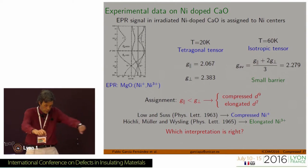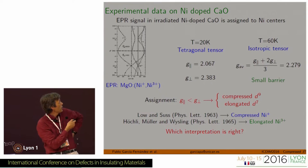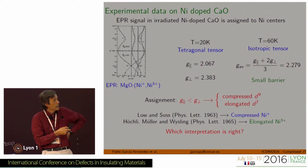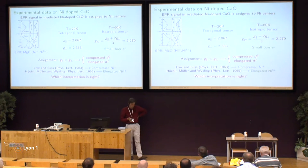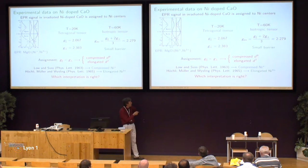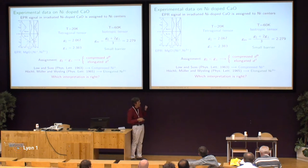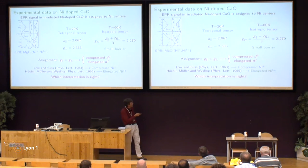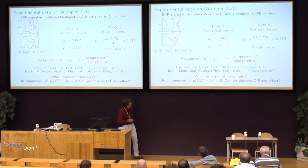Both assignments are in the literature. The first, by Lowell and Seuss in 1963, indicated this is a compressed Ni+ center, a D9 impurity. But this was corrected by Hockley, Mueller, and Wiesling, who, based on the theoretical arguments I gave before, indicated this must be an elongated Ni3+. Our question here is whether we can revise these interpretations. It is important that if this is a compressed D9, maybe we could observe the O'Brien effect.